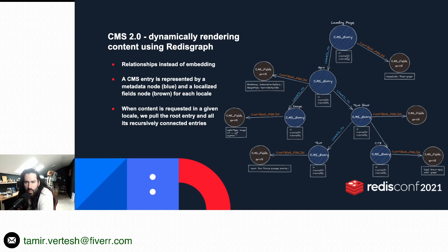When content is requested — for example, fetching a landing page by ID — the graph database does the rest for us. It fetches all the connected nodes alongside the main landing page node. We don't need to do any bookkeeping or know how to navigate to those nodes; the graph database handles all of that. We get back a response in table form, and all that's left is to convert that into one big JSON and respond with it.